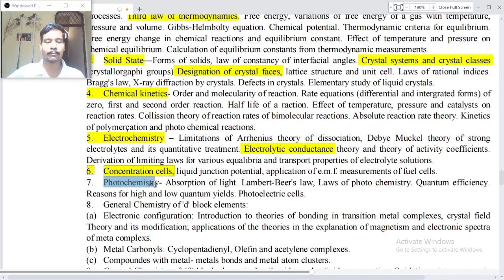Point number six: Concentration cells, liquid junction potential, application of EMF measurements of fuel cells, photochemistry, absorption of light, Lambert-Beer's law, laws of photochemistry, quantum efficiency, regions for high and low quantum yields and photoelectrical cells, general chemistry of d-block elements.